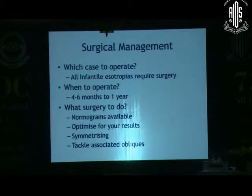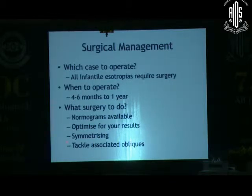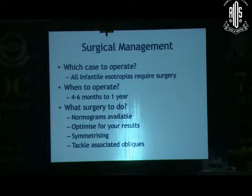When do we do it? Four to six months of age — we're now doing it earlier and earlier. The thought was to do it a little later, but four to six months is now what is established. You must do a symmetrizing surgery, usually operating both eyes depending on the angle. The surgery should not induce any incompetence, and you must always tackle any associated obliques, nystagmus, or DVD along with that.